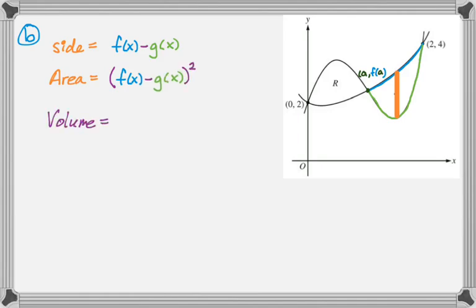So the volume will just be the integral from a to 2 of the area of a cross section, so like that, and then you punch it into your calculator, and your calculator tells you 1.283. So not really very bad.